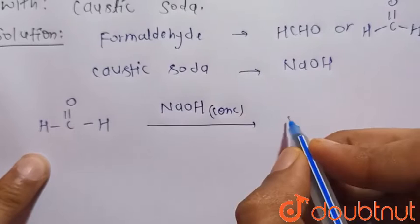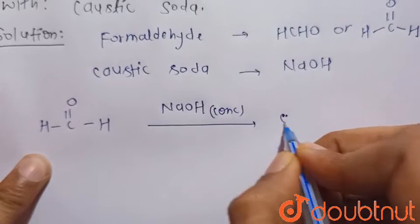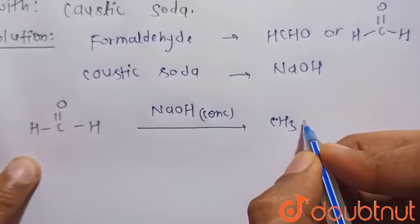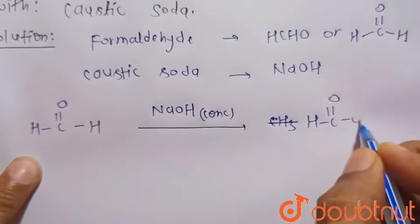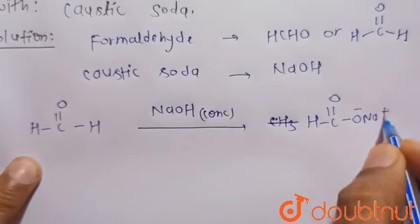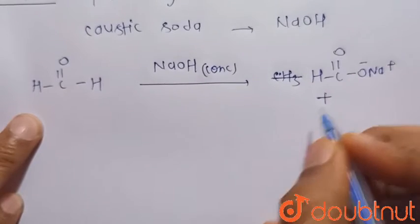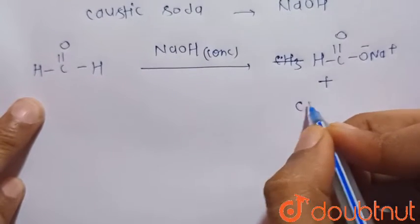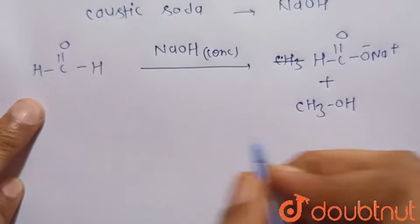So it will change into HC double bond O, O minus Na plus, that is sodium formate. This is the oxidized product. And CH3OH, this is the reduced product of formaldehyde.